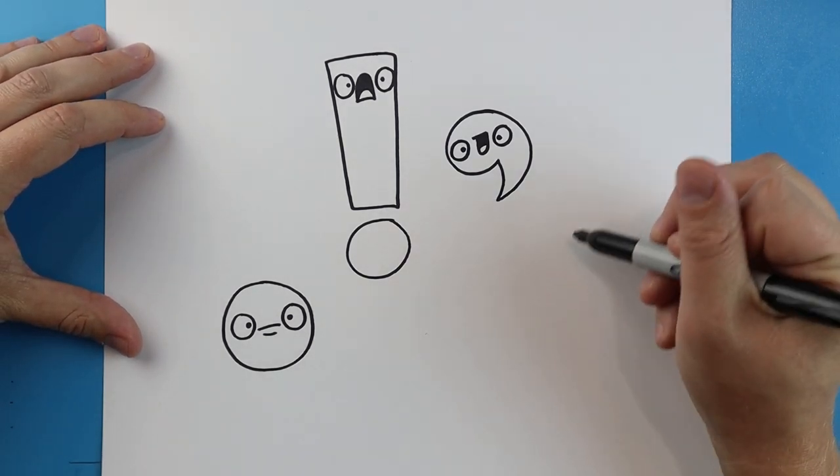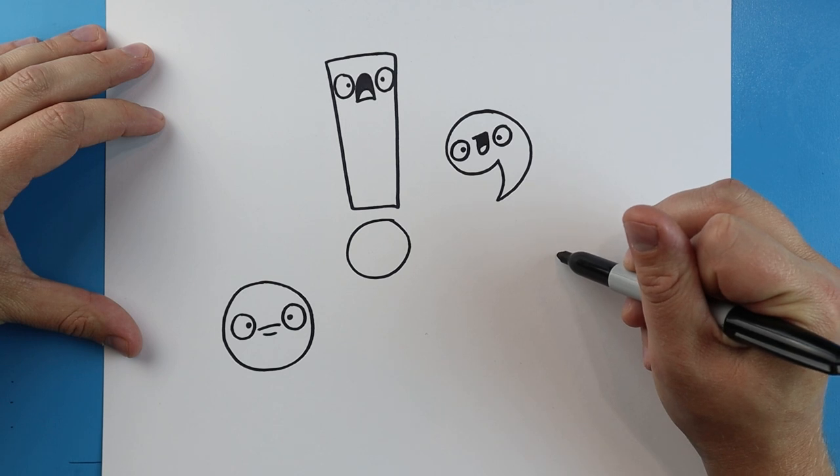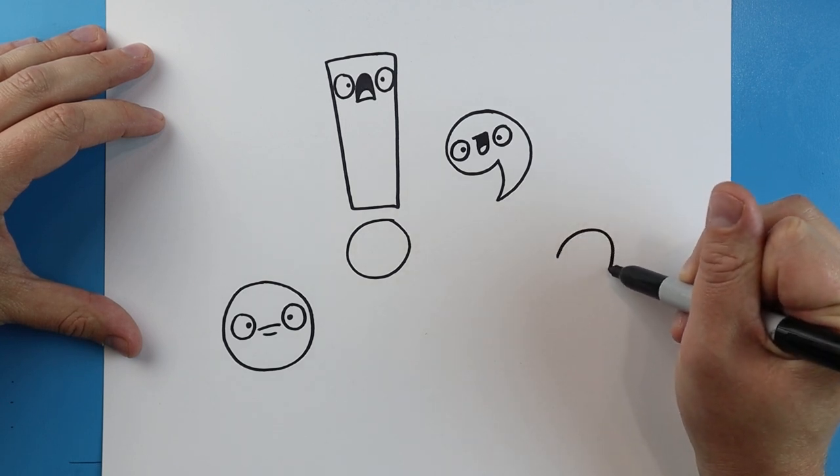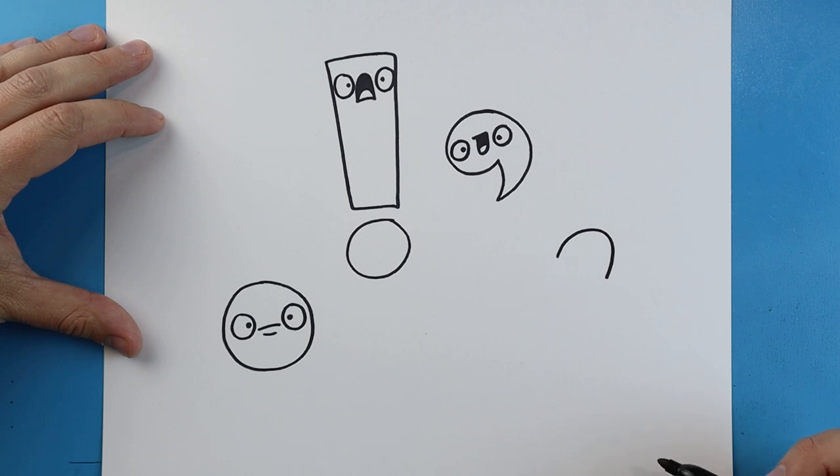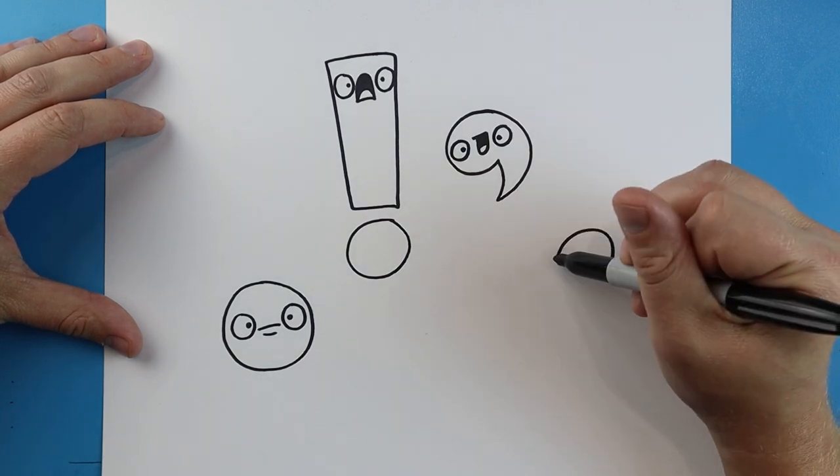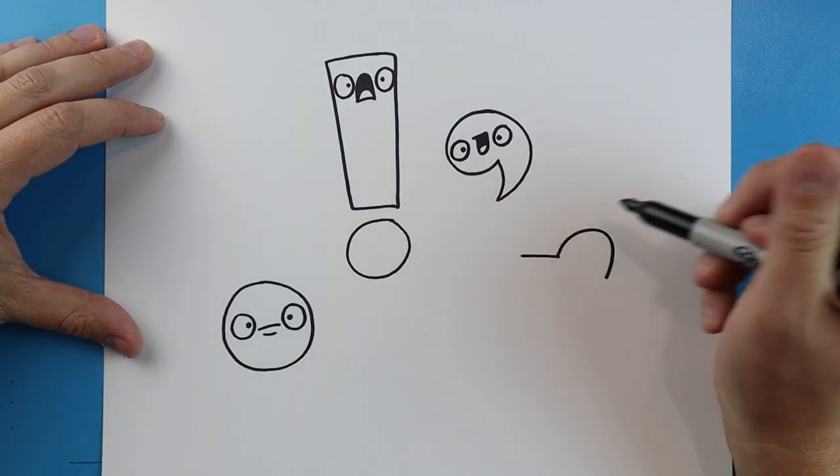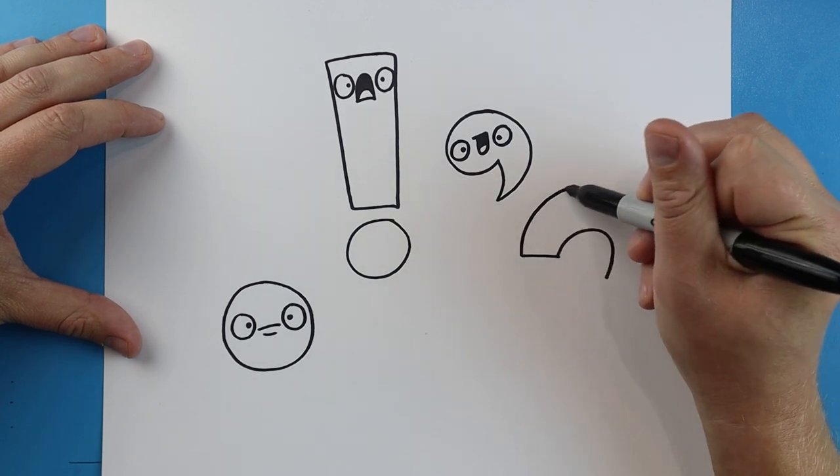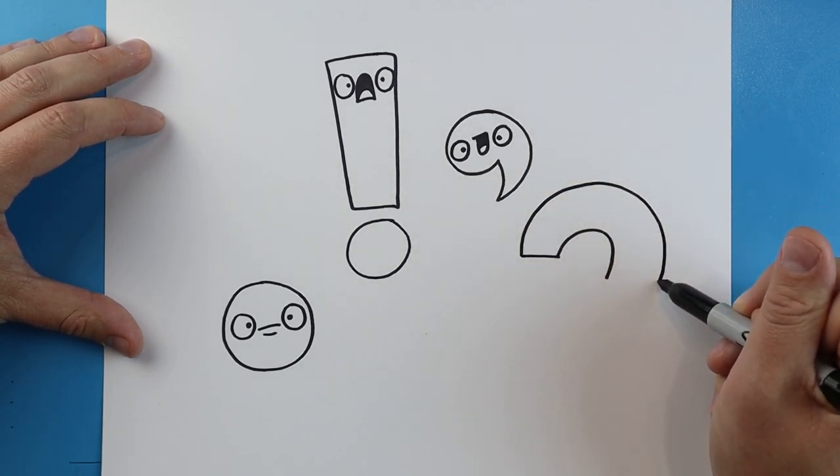Now for the question mark. I'm going to start right here. I'll draw a little kind of sad face shape like this. I'll make a line that comes across. Then I'll make another curved line right here.